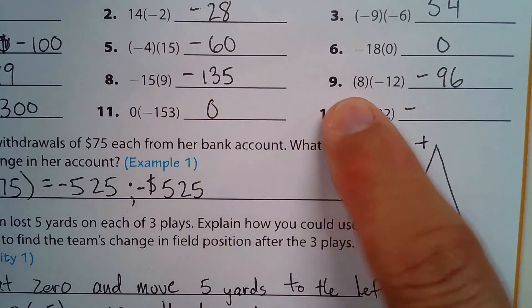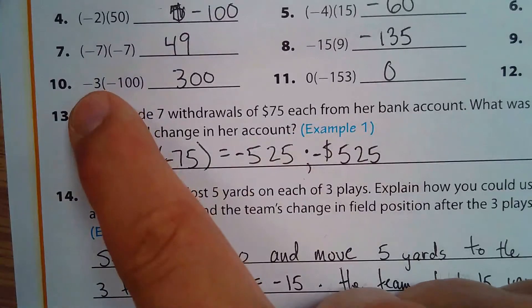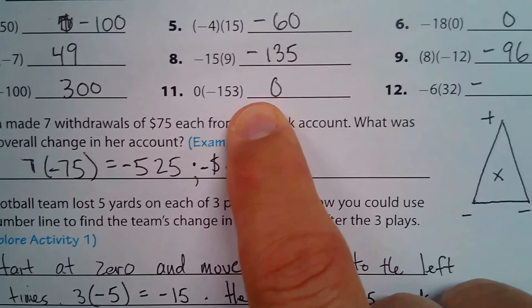And 15 times 9 is 135. 8 times 12 is 96. 3 times 100 is 300. Multiplying by 0 always gets you 0.